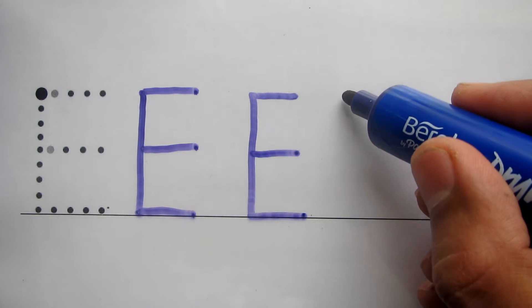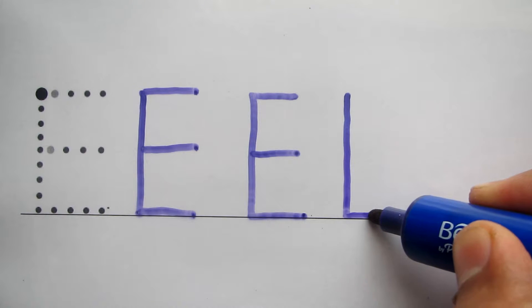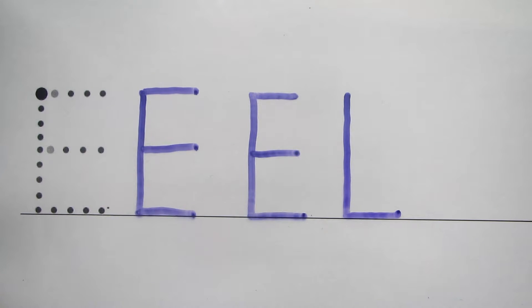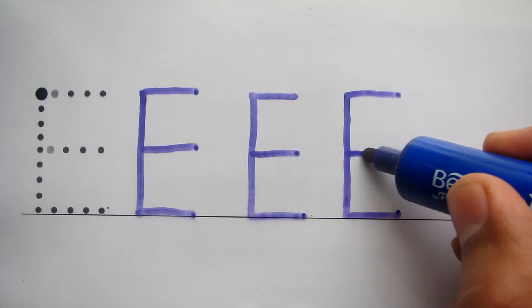Or you could do it this way: start at the top, straight down to the bottom and across. That is one stroke like the capital L. One line across there and one across the middle.